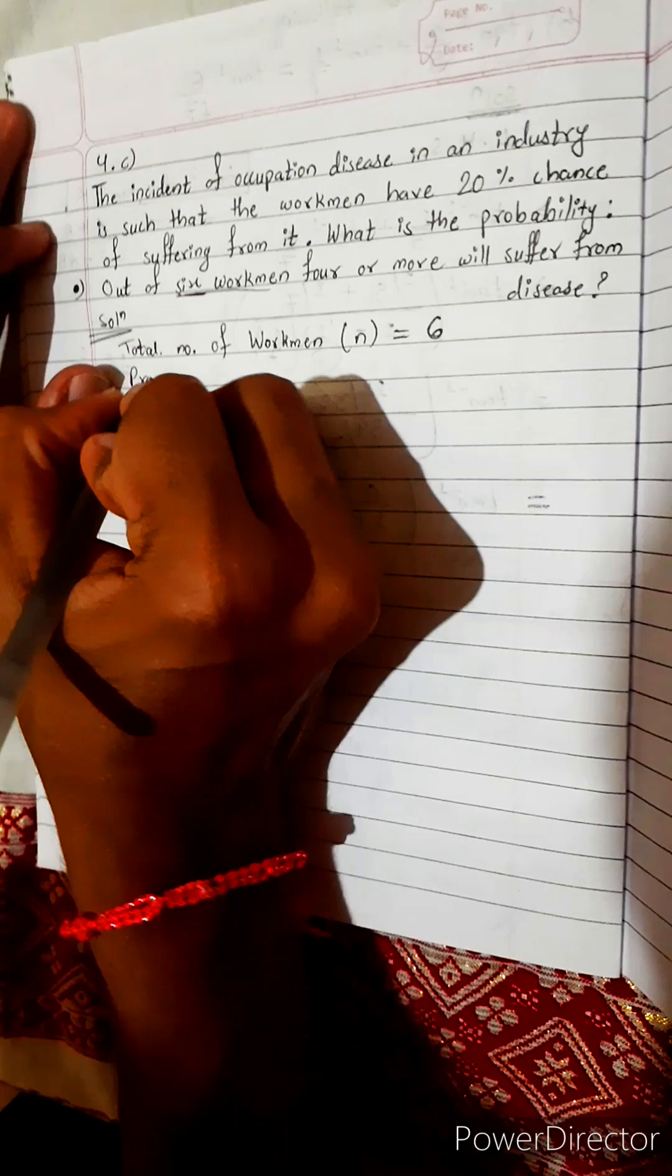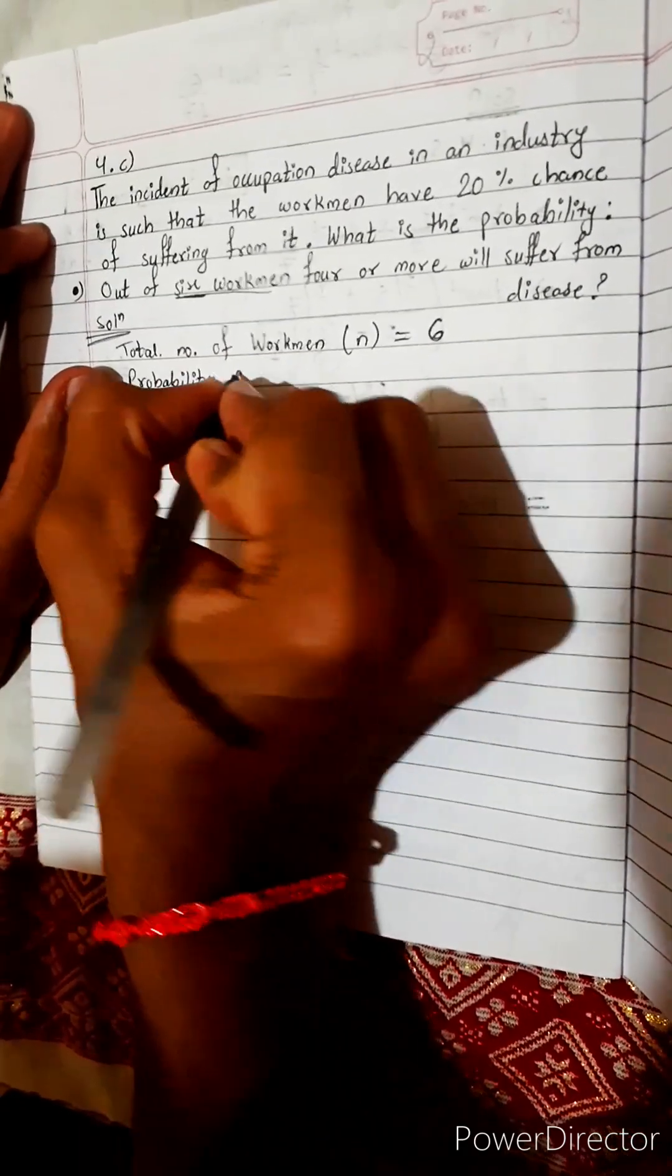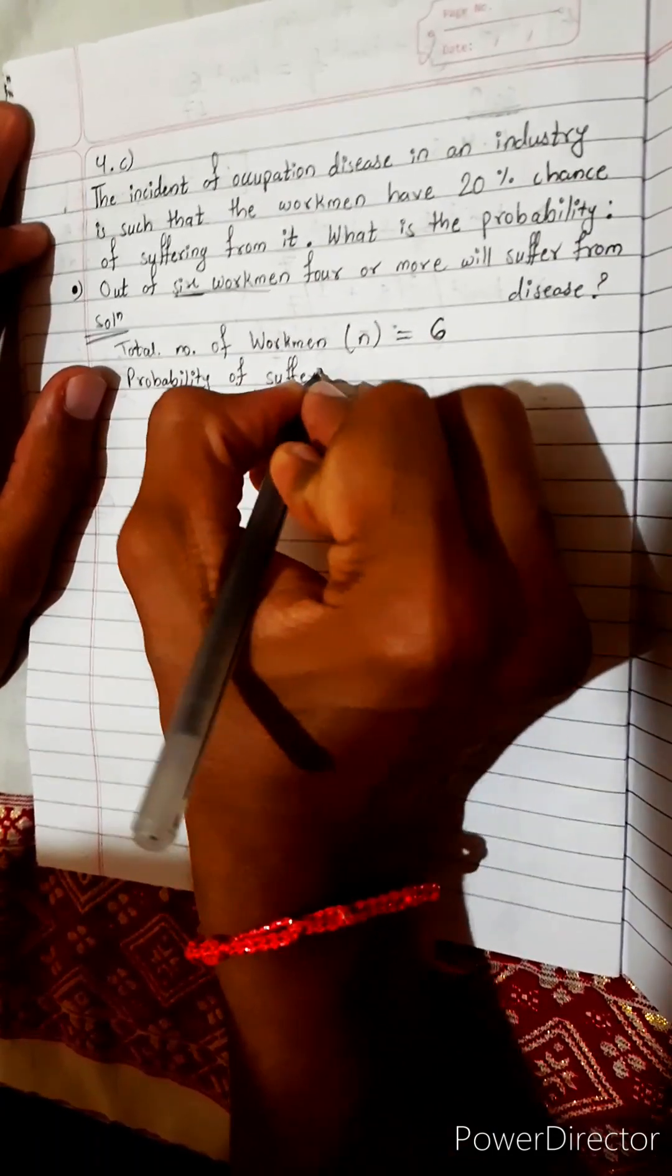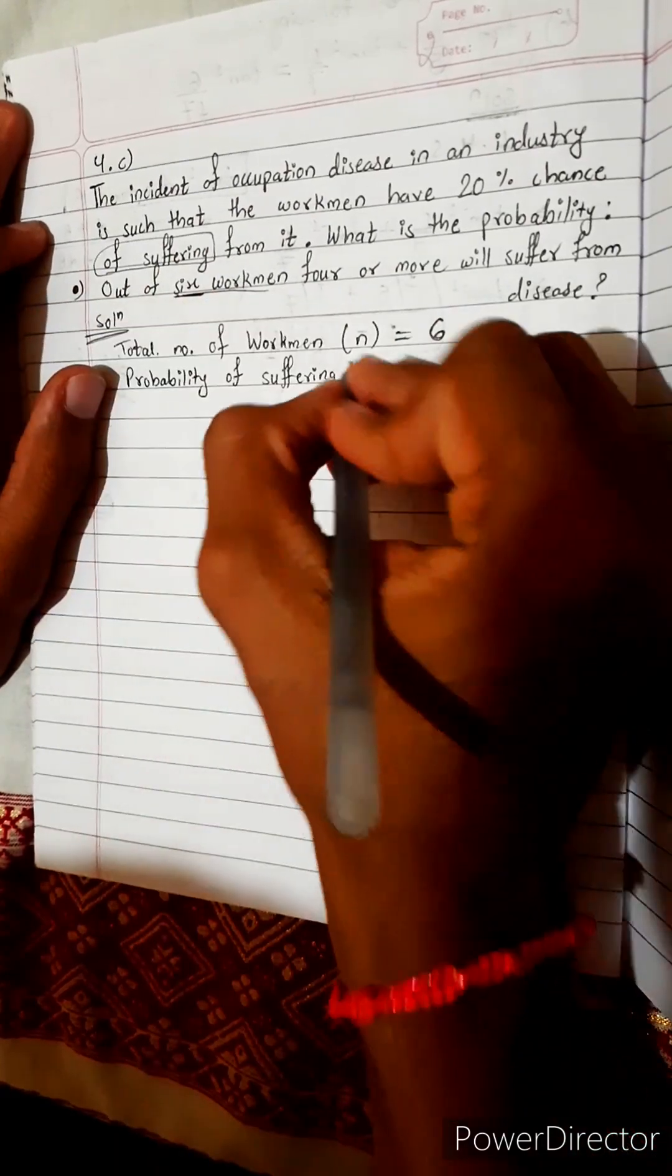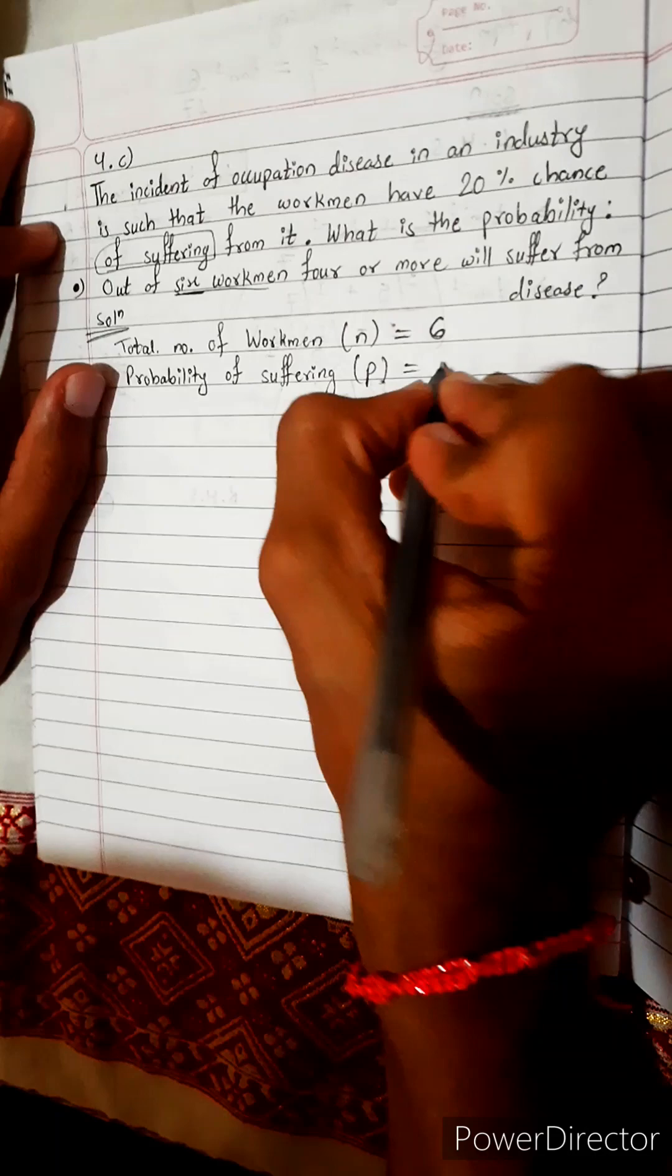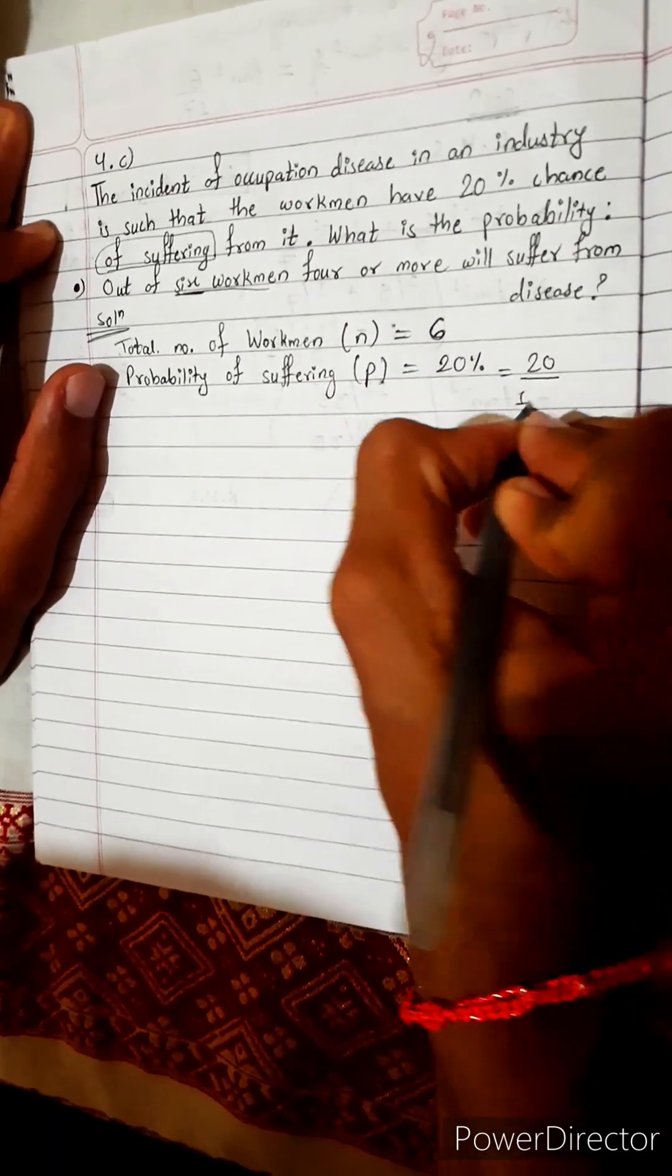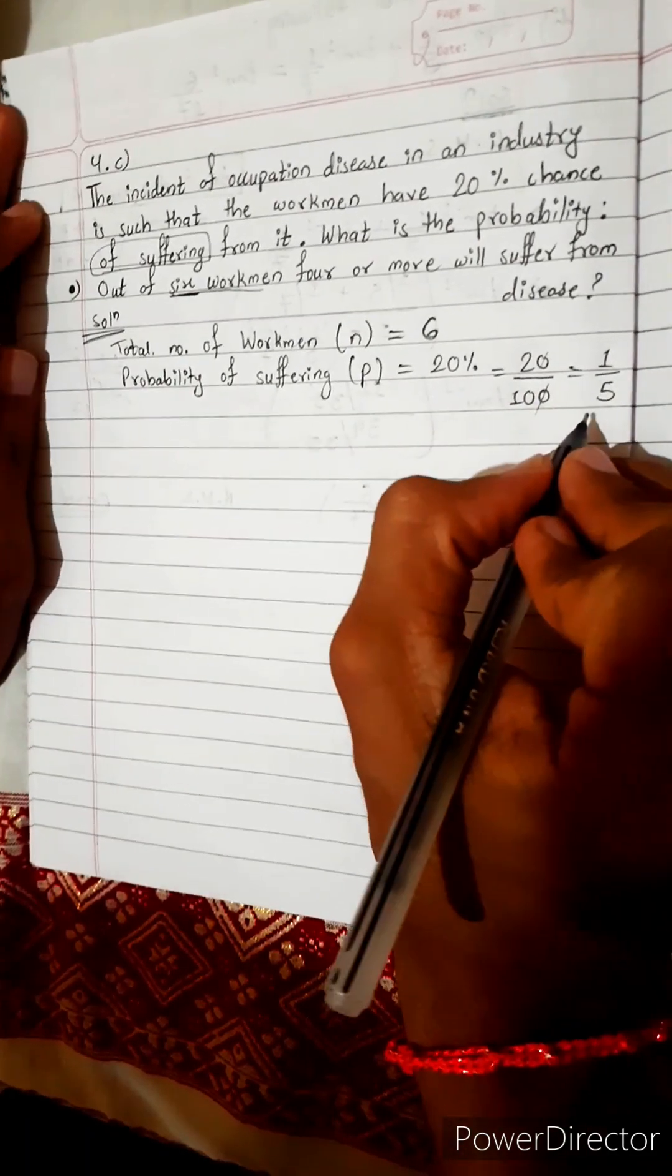Now probability of suffering. There's a 20% chance of suffering, so probability of suffering, let's consider this is P. It will be 20%, 20% means what? 20 per cent, cent means 100, so it is 20 over 100 which equals 1 by 5.